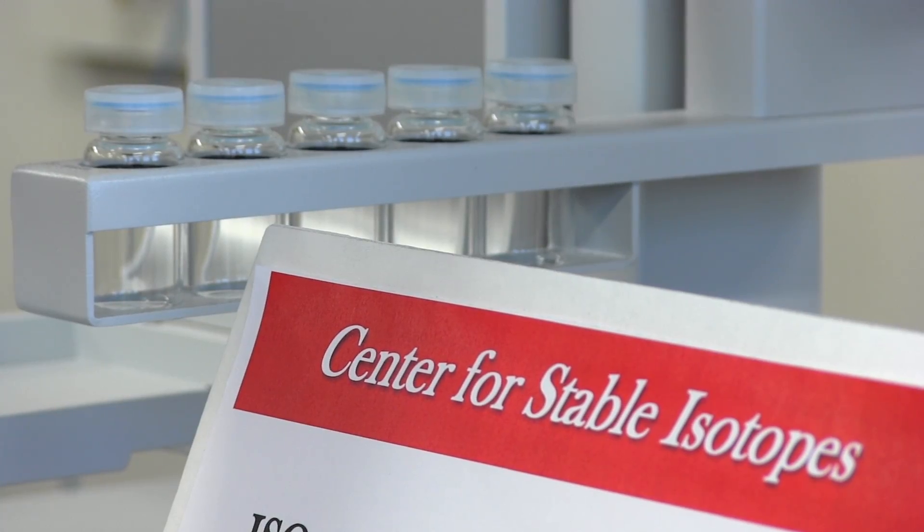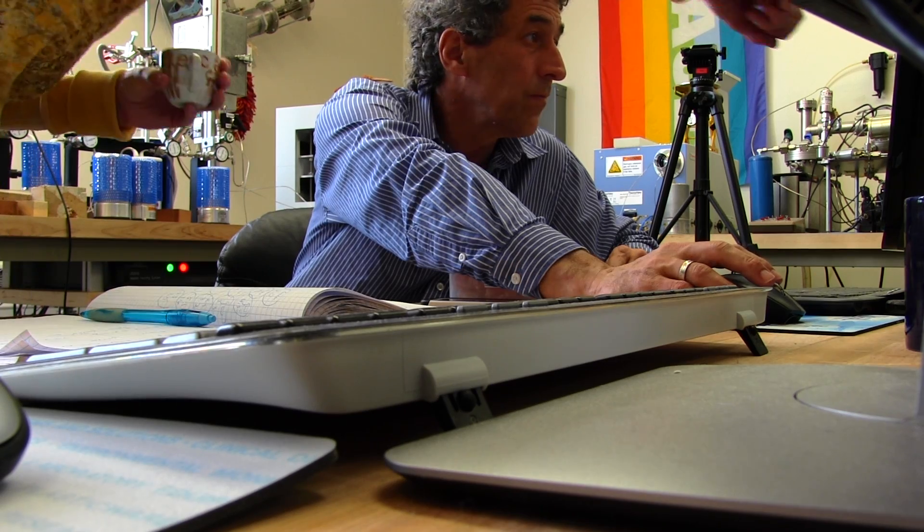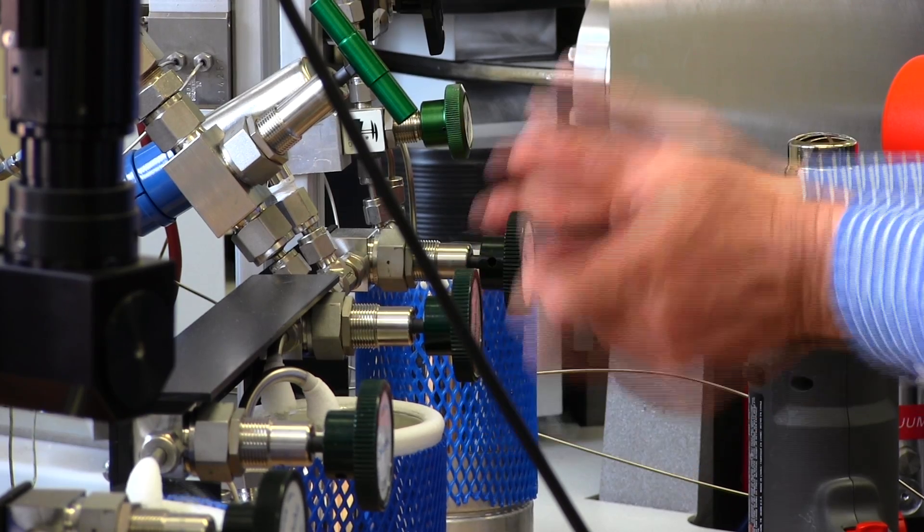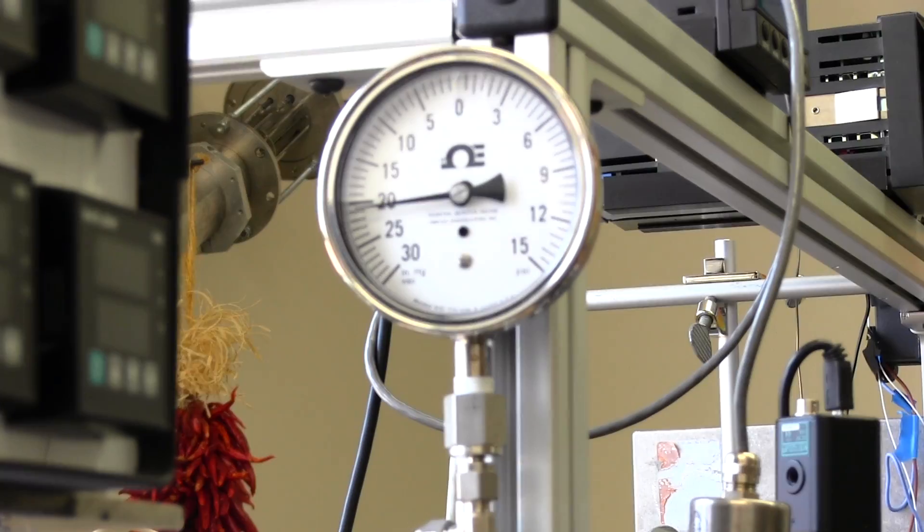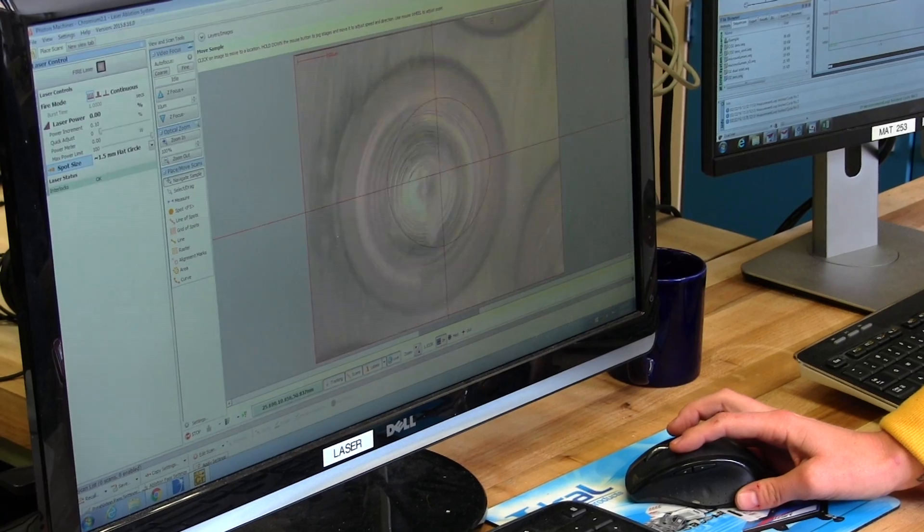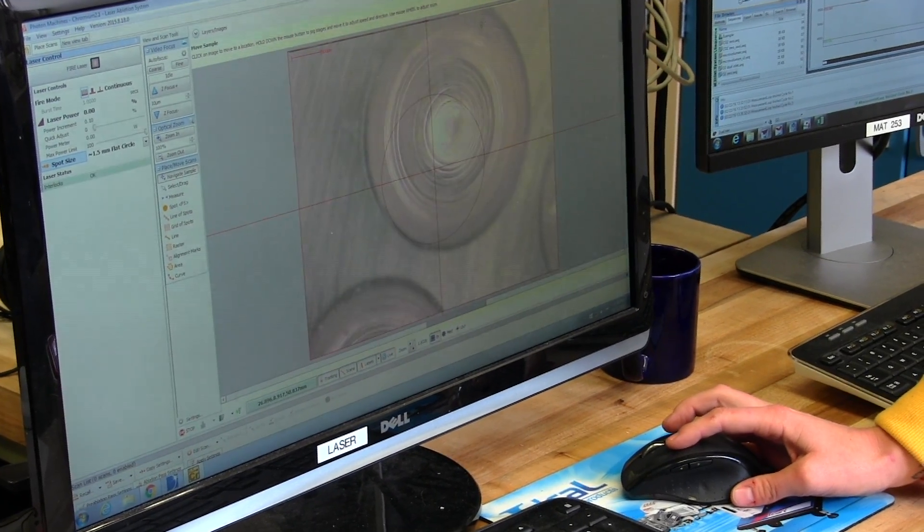Our Center for Stable Isotopes is really unique in North America, maybe in the world. What we do here is to take natural materials and put them into a form that can be measured in a mass spectrometer.